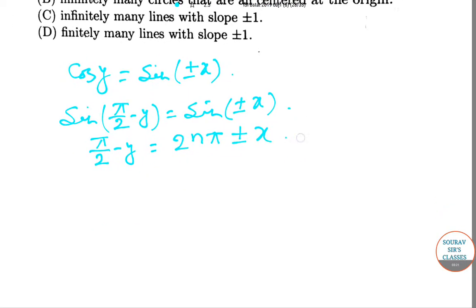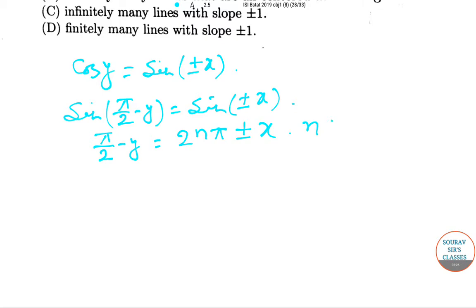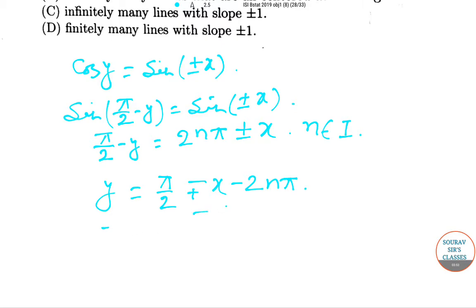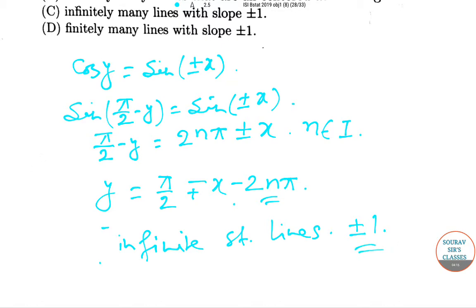So from here, y = π/2 ∓ x - 2nπ. You can easily see this is the equation of infinitely many straight lines with slope ±1. So the answer is option C.